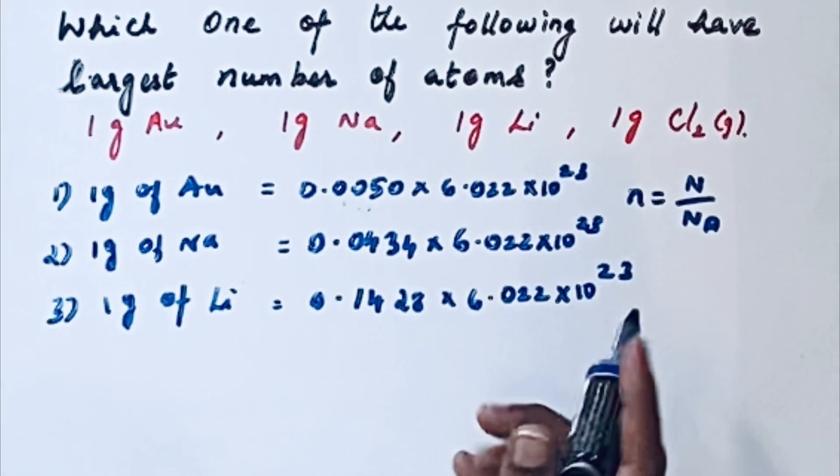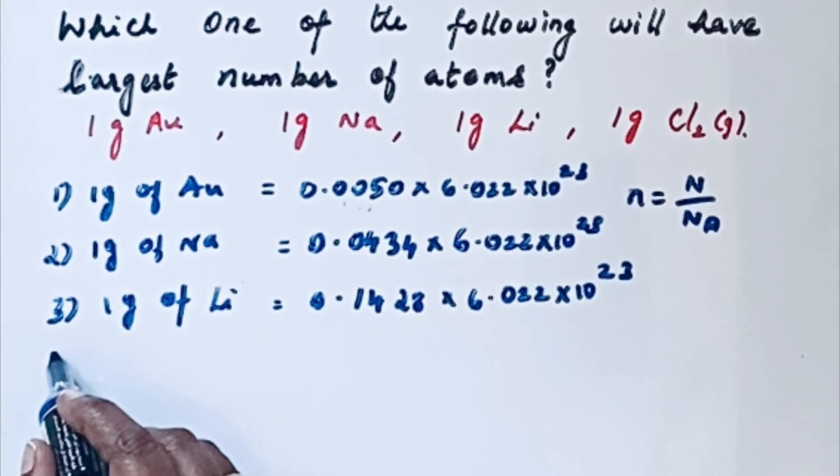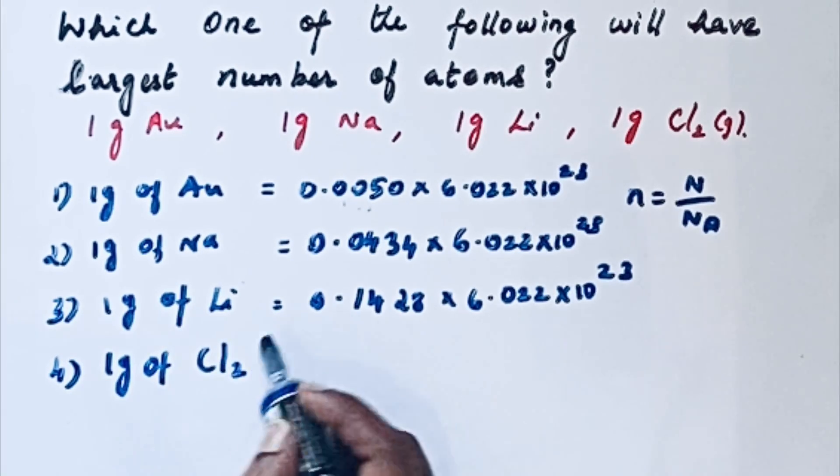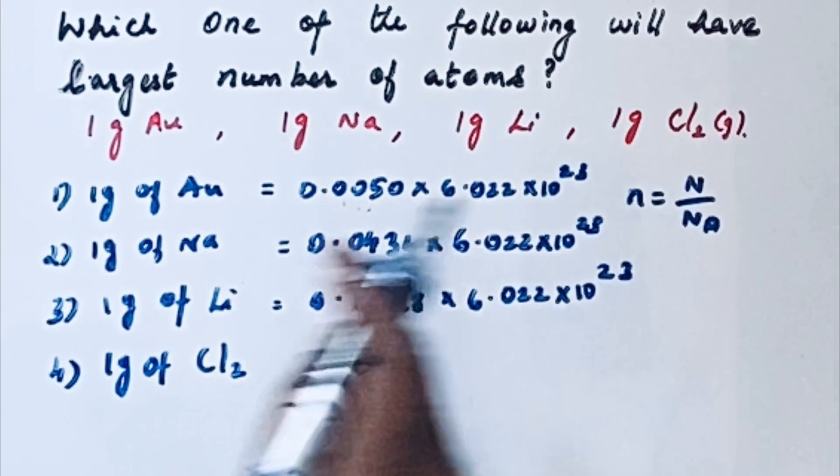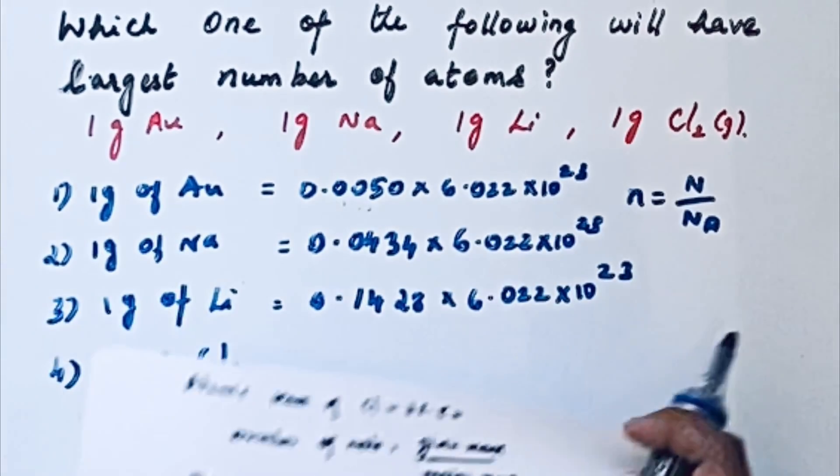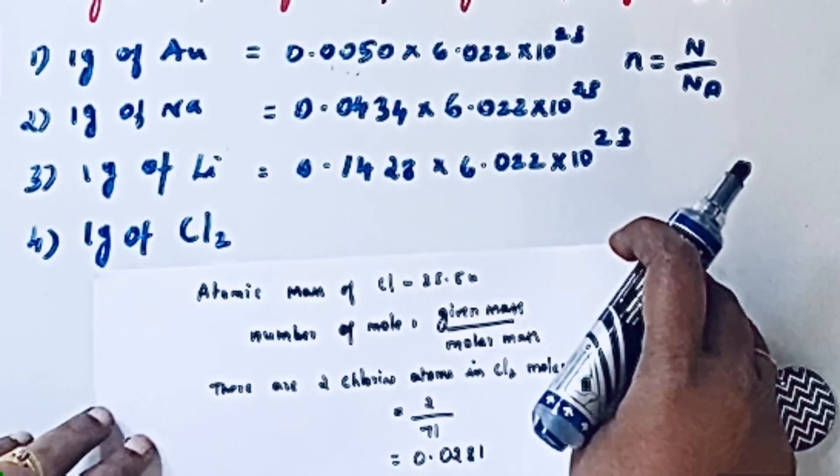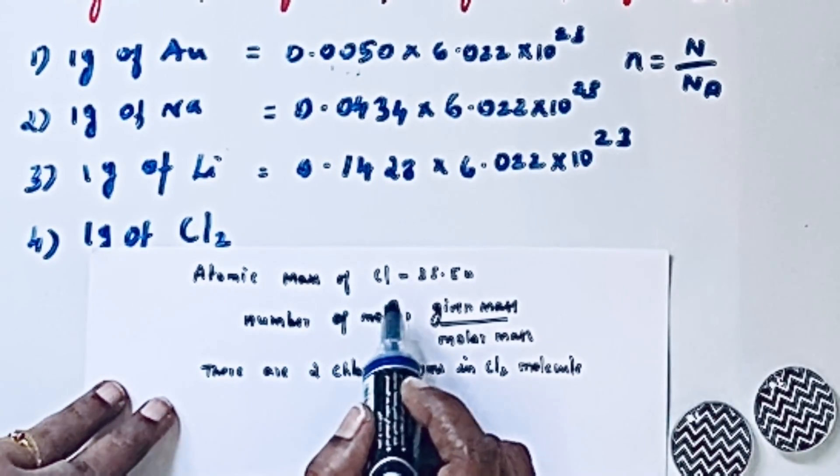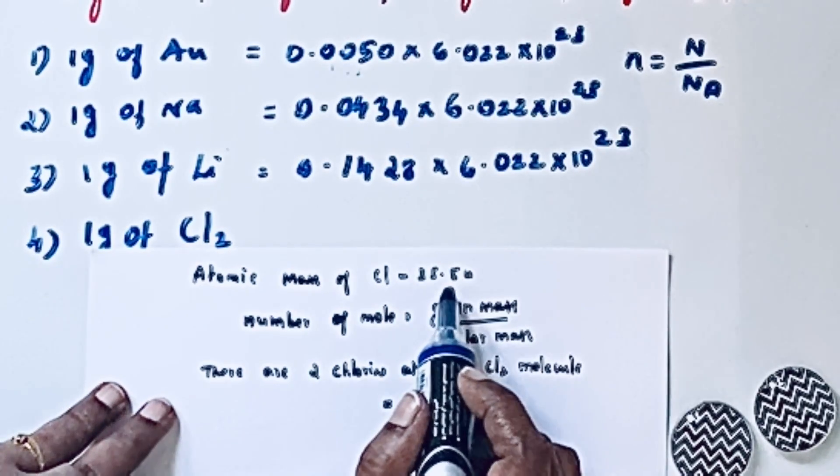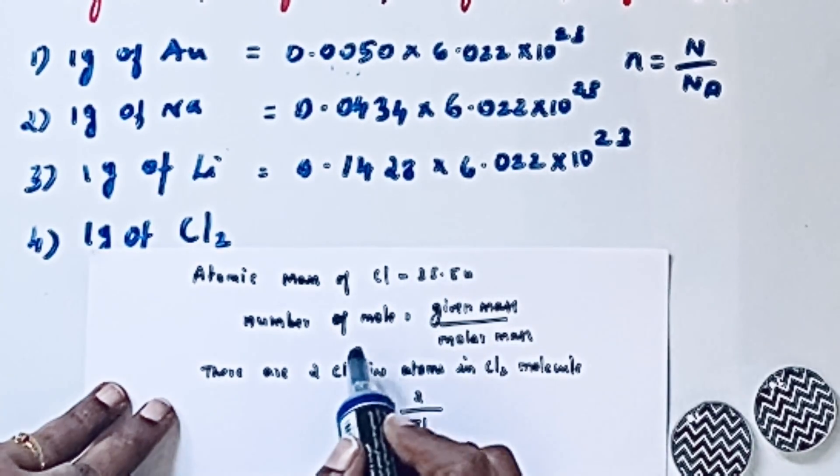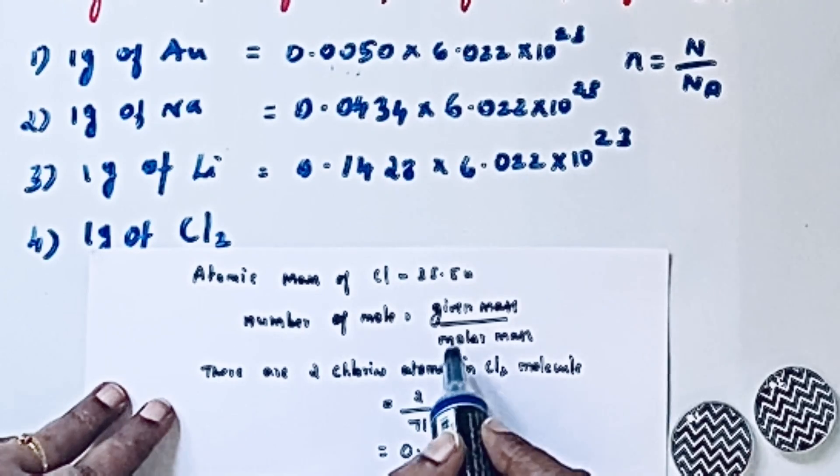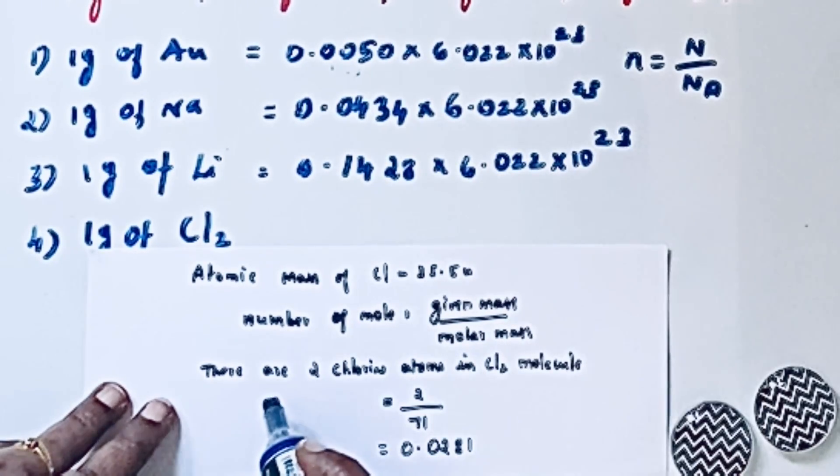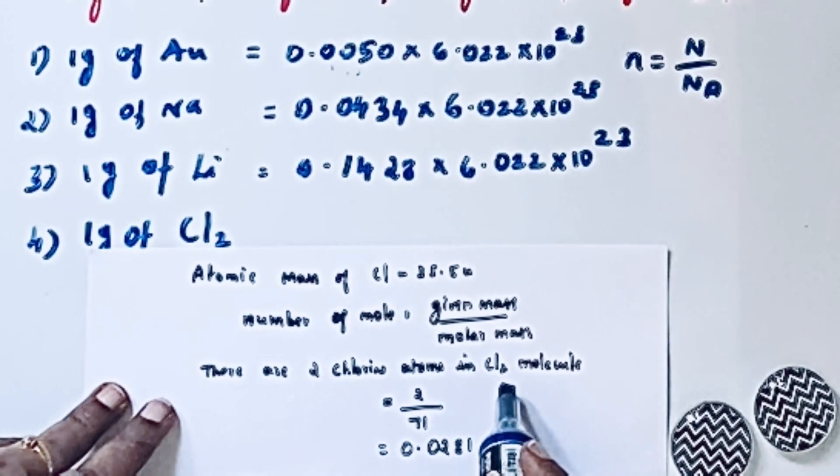Next we will go for 1 gram of chlorine gas. Here you should see that it is a chlorine gas, so it is a diatomic molecule. So we need to consider very carefully. Atomic mass of 1 chlorine atom is 35.5 u. As per the formula, if you apply, but here it is a diatomic gas molecule.